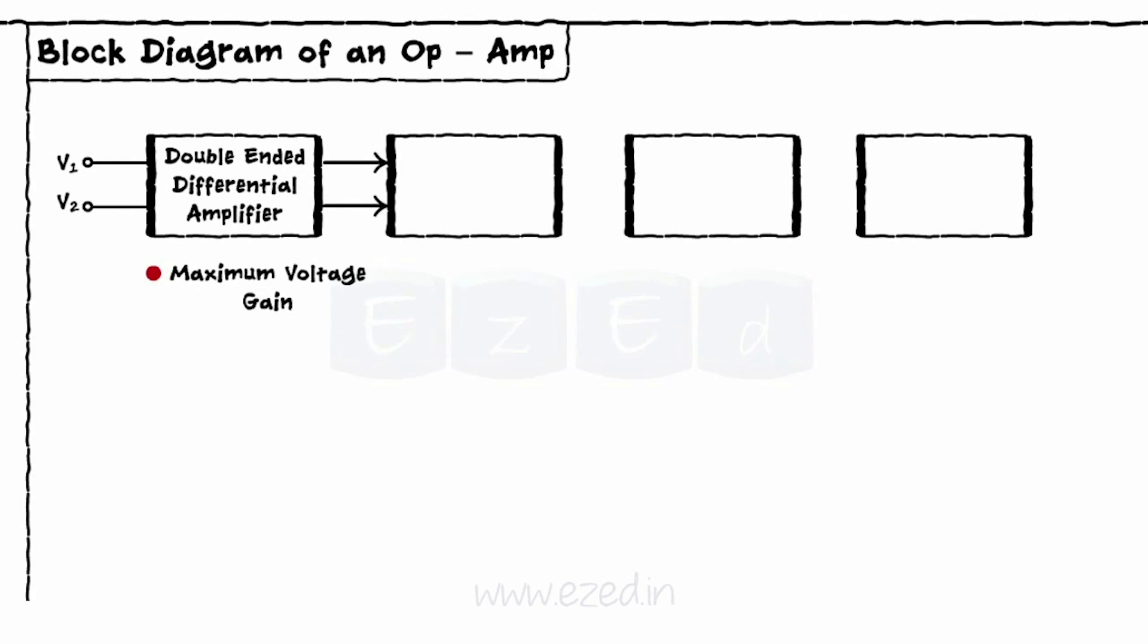Hence, it is called a double-ended differential amplifier. The second block is an intermediate stage known as single-ended differential amplifier.